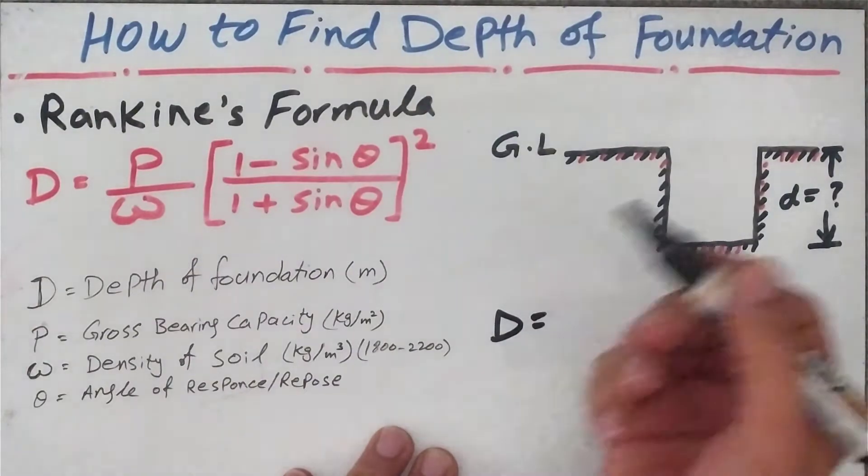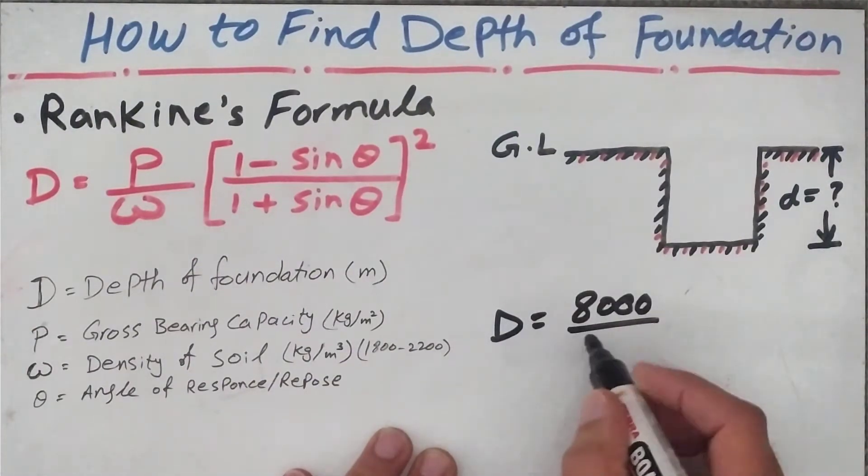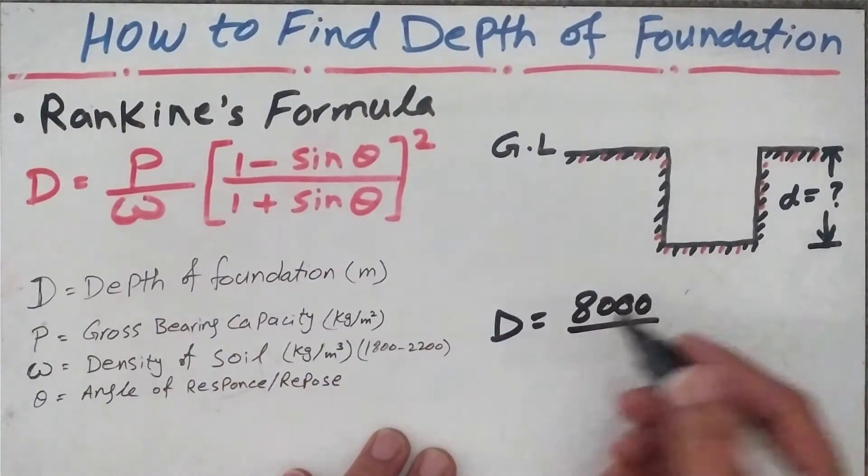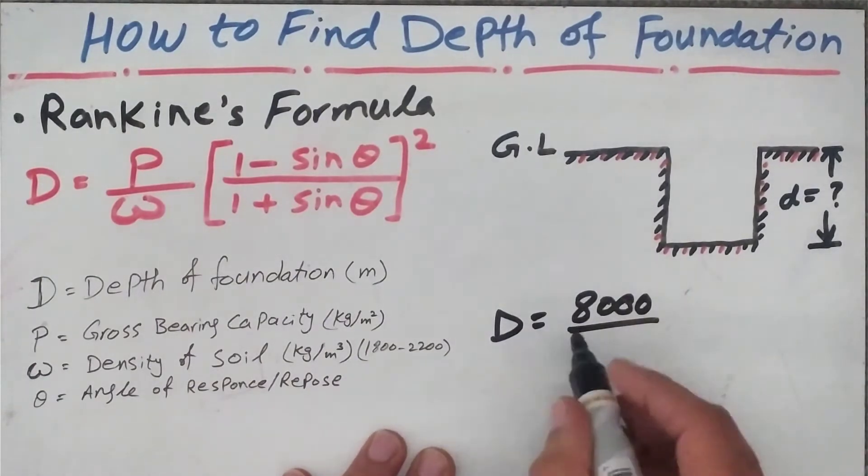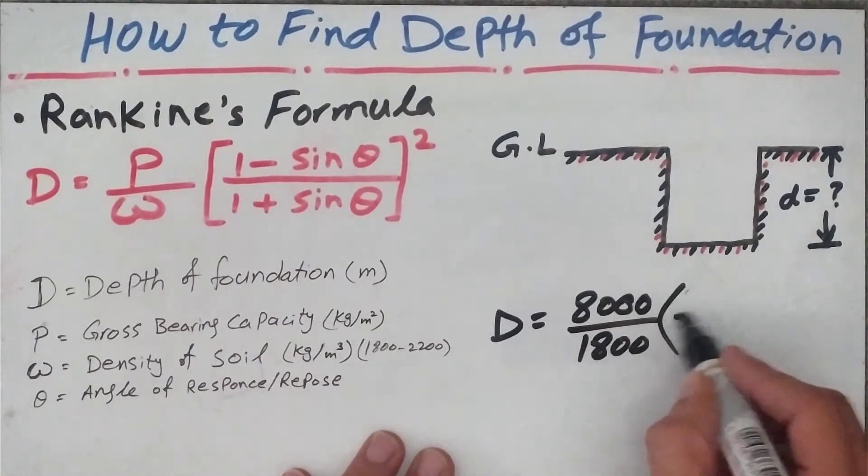If I apply the formula for a certain example, let's say D equals our load P = 8000 divided by our density...